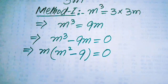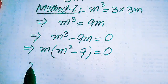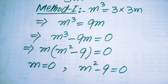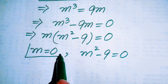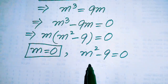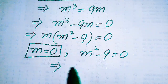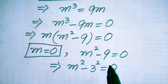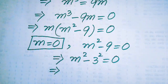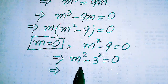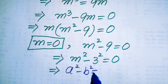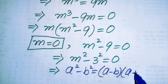We divide this equation into two cases. The first case is m equals to 0, and the second case is m squared minus 9 equals to 0. To find the other roots we rewrite m squared minus 9 as m squared minus 3 squared equals to 0, and we use the algebraic formula: a squared minus b squared equals to a minus b times a plus b.